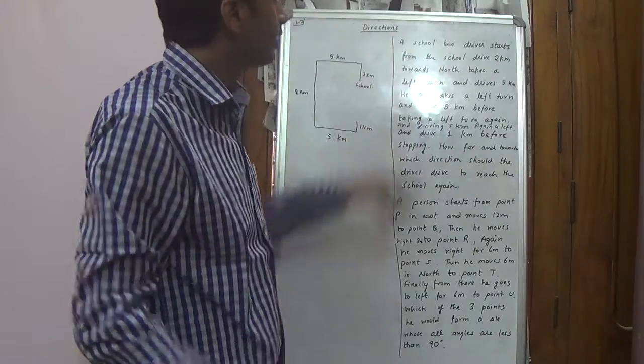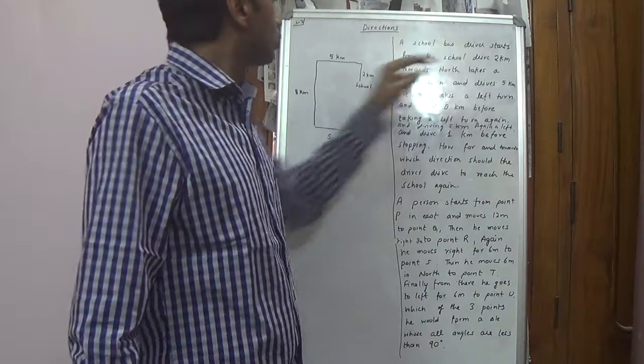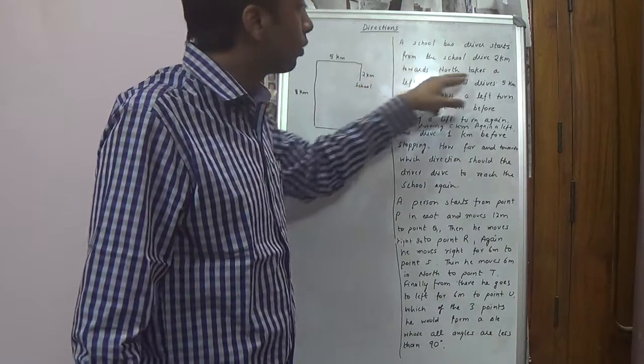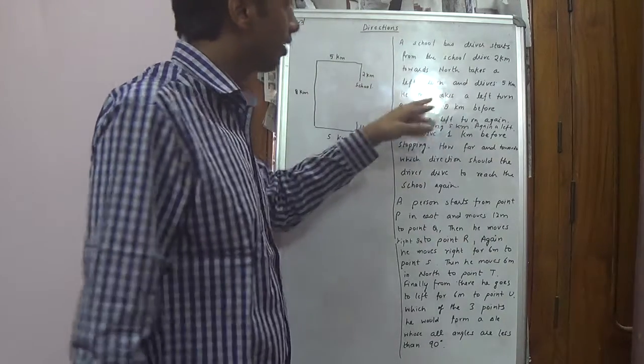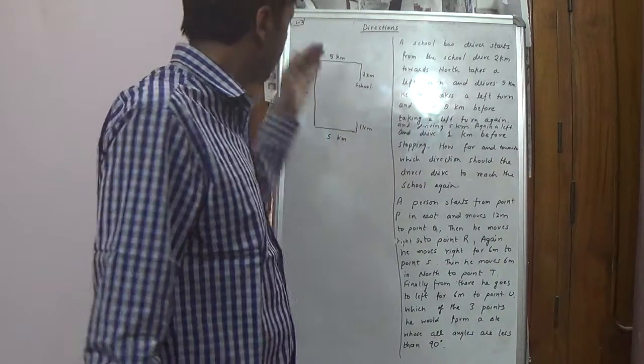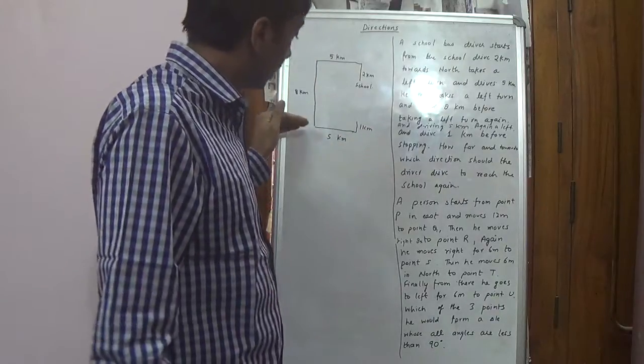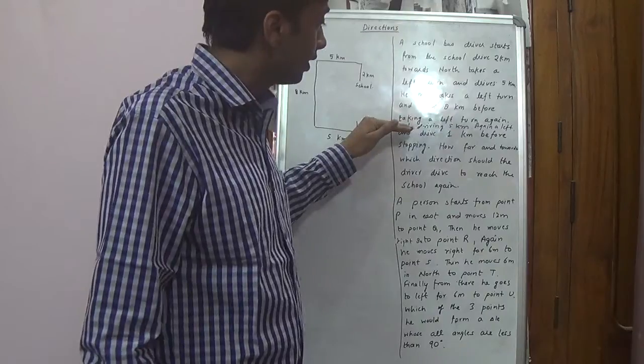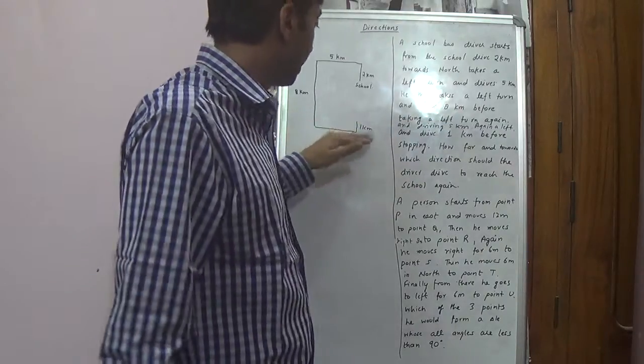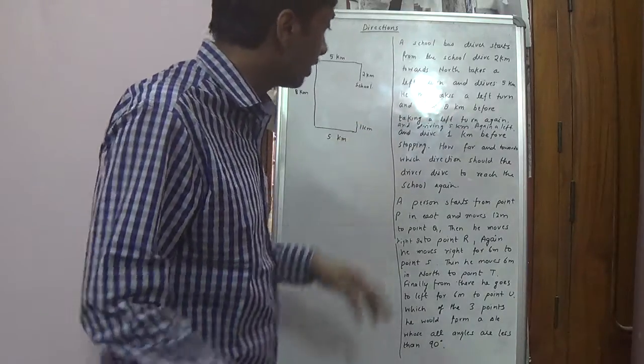I will read the question again. A school bus driver starts from the school, drives two kilometers towards north, takes a left turn and drives five kilometers. He takes a left turn and drives eight kilometers. Then again, he takes a left turn driving five kilometers. And then, he takes a left turn and drives one kilometer and stops.